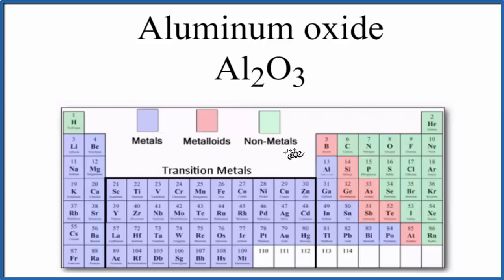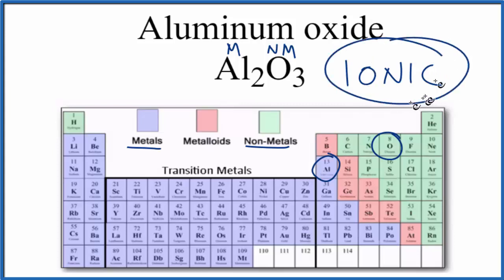So we could look at the periodic table and aluminum right here. Aluminum is a metal. Oxygen over here, that's a non-metal. So when we have a metal and a non-metal, we're thinking that it's going to be an ionic compound almost all of the time.